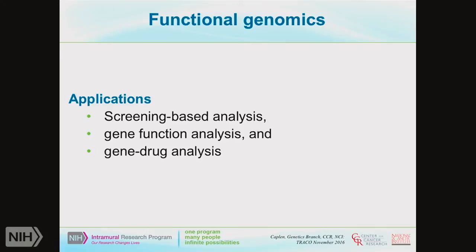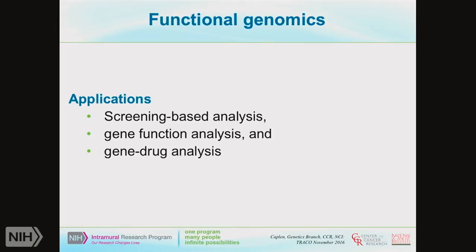The papers I'm going to discuss in the context of CRISPR screens in cancer cells came out in August in Cancer Discovery — two back-to-back papers. I'll focus on Monzo et al., though the other paper complements it and I encourage you to look at both. Aguirre et al. performed CRISPR screens in 33 cell lines, making high-expressing Cas9 lines for each. They screened essentially the whole genome with a depth of about six single guide RNAs per gene, using about 500 cells per guide on average as a lentiviral library. Monzo et al. did a variation: only five cell lines but 20 guides per gene and slightly more cells per single guide.